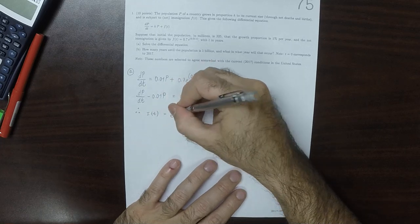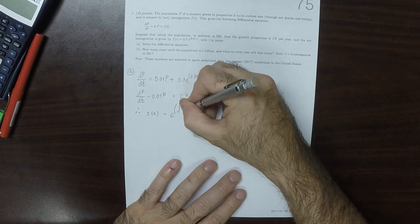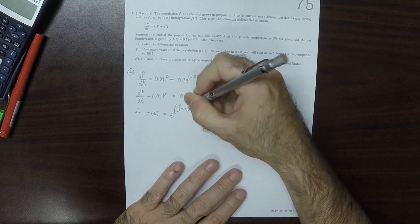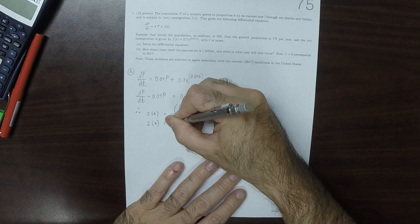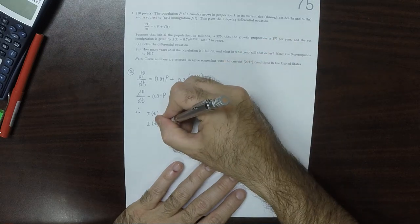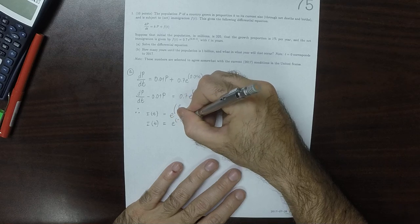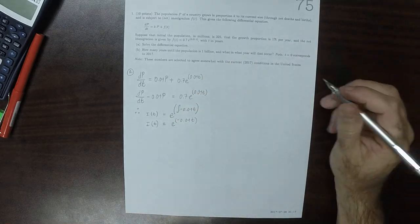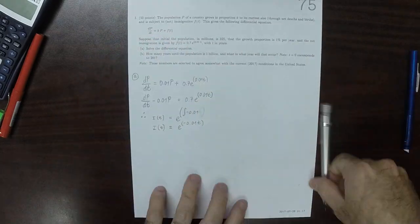is the exponential of the antiderivative of -0.01t, which is e^(-0.01t). This, of course, should be dt.